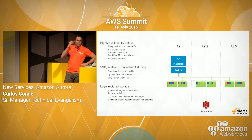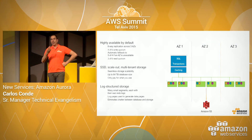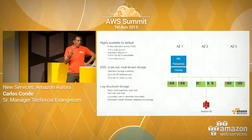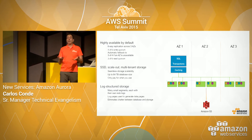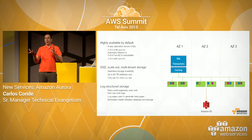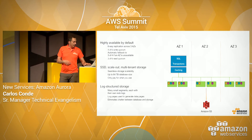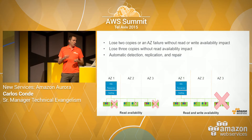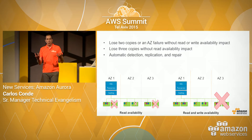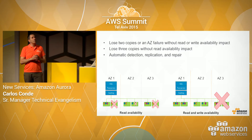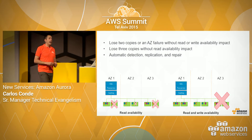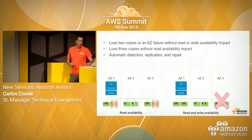Talking about the replication, Aurora is highly available by default, because we do a six-way replication across three availability zones. There's always a quorum of four copies of your data out of six. This architecture allows us to sustain and recover the databases even if we lose three copies of the data — we can recreate the whole cluster and keep consistency in your application.